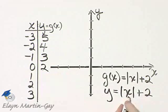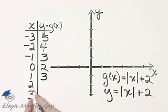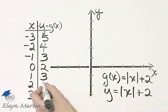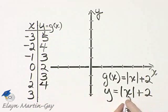Absolute value of 1 is 1, plus 2 is 3. The absolute value of 2 is 2, plus 2 is 4. And the absolute value of 3 is 3, and 3 plus 2 is 5.